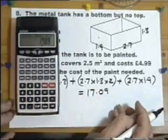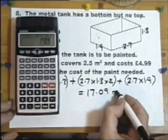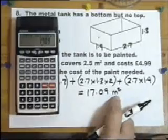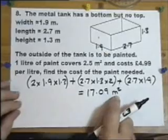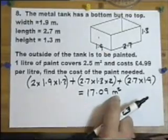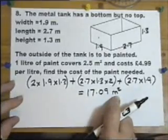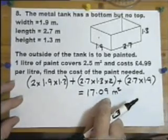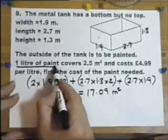That's the total area to be painted - that's in square meters. Now each square meter will cost me £4.99, but I need to know how much paint I'm going to have to buy, so I need to read that sentence there a bit carefully.